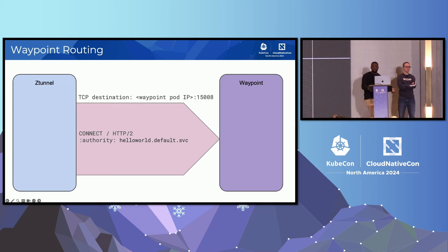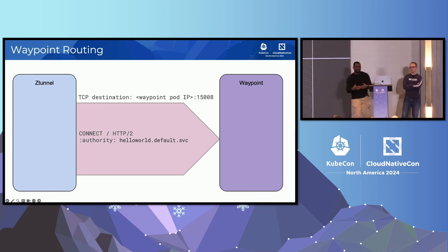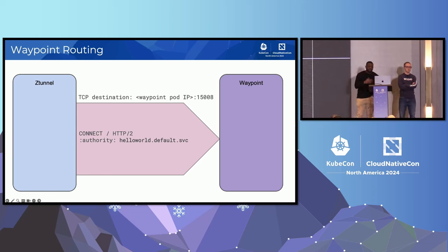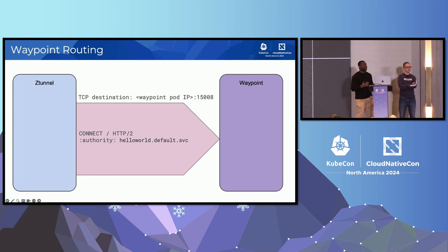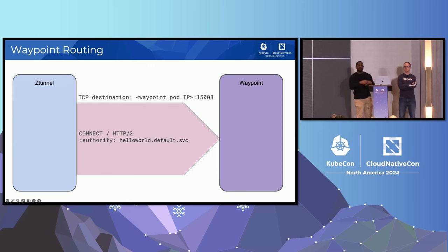We can also add observability metadata in those headers — tracing headers for Jaeger or OpenTelemetry — without modifying the original request. And this works even for non-TCP traffic. You might wonder why the waypoint can't just read the host header from the original request directly, as original sidecar Istio did. But we want waypoints to work for non-HTTP traffic like TCP as well, and eventually UDP. Using HTTP Connect encapsulation gives us flexibility to add any kind of metadata for future use cases.